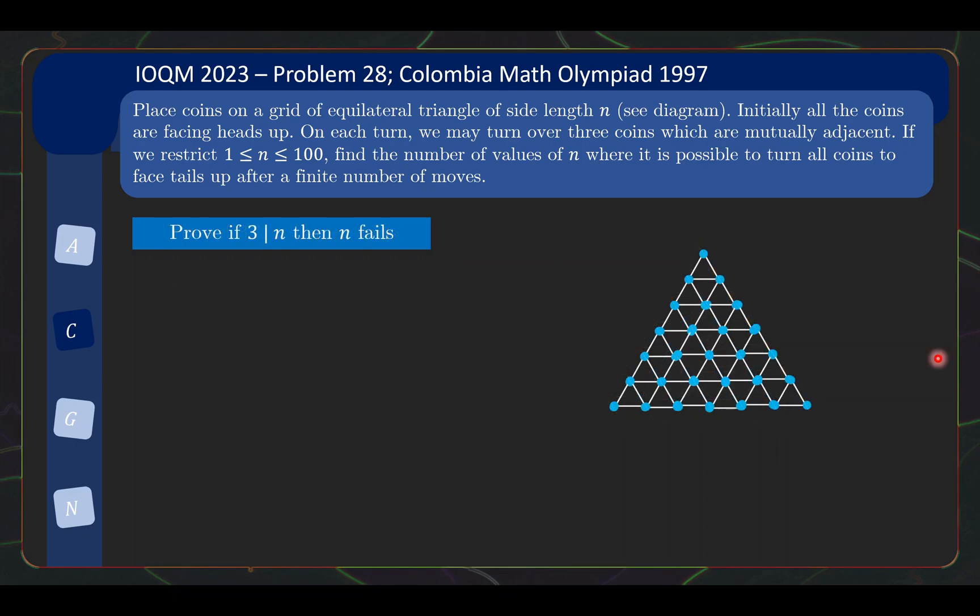And the second half uses yet another different standard combinatorics technique, which is coloring plus invariant. So now we want to show the case that if n is a multiple of 3, then n fails. And this is quite a standard idea to try. Basically, you want to set up some coloring that will allow you to define some invariant. And we show that in the scenario where all the tails are up, the invariant will be broken, so therefore the value of n doesn't work. So what is this coloring scheme that we want to set up?